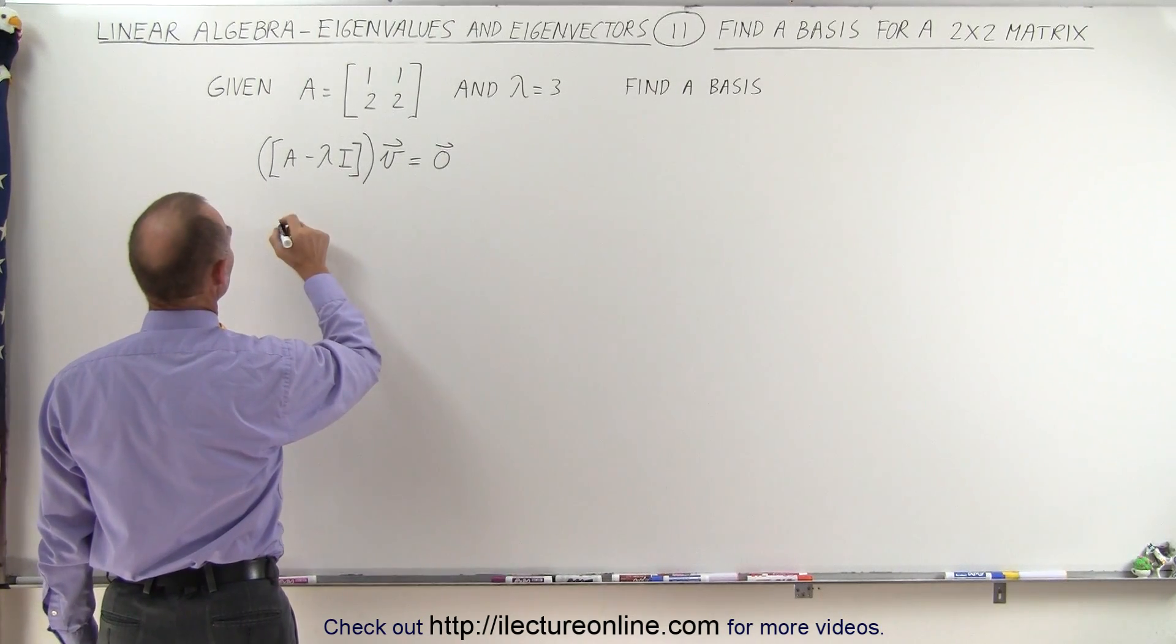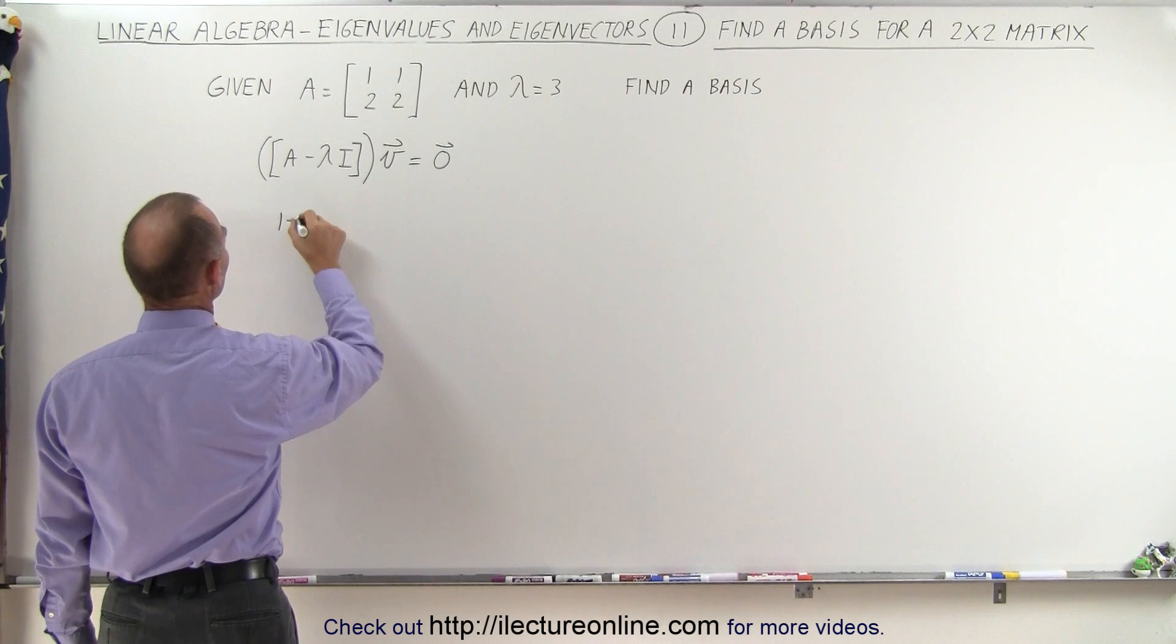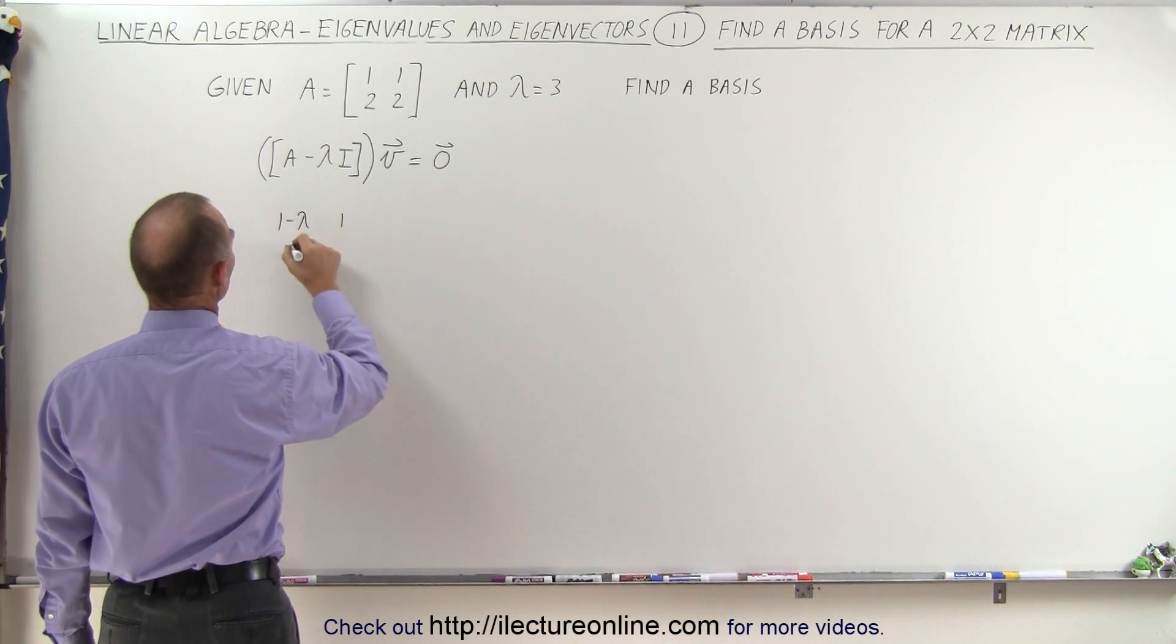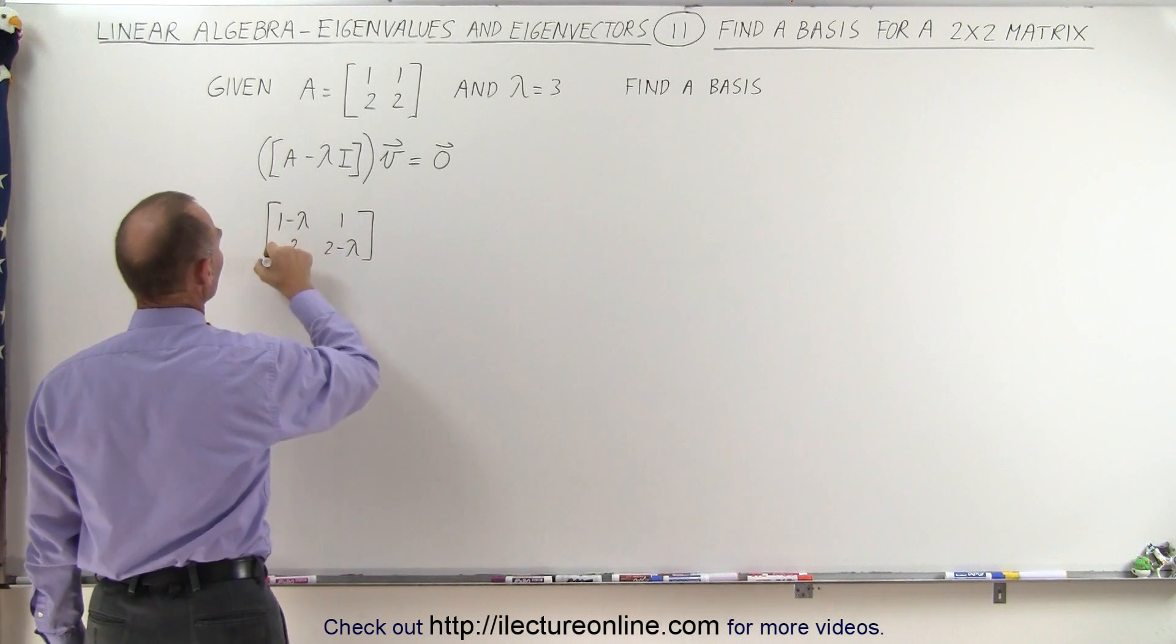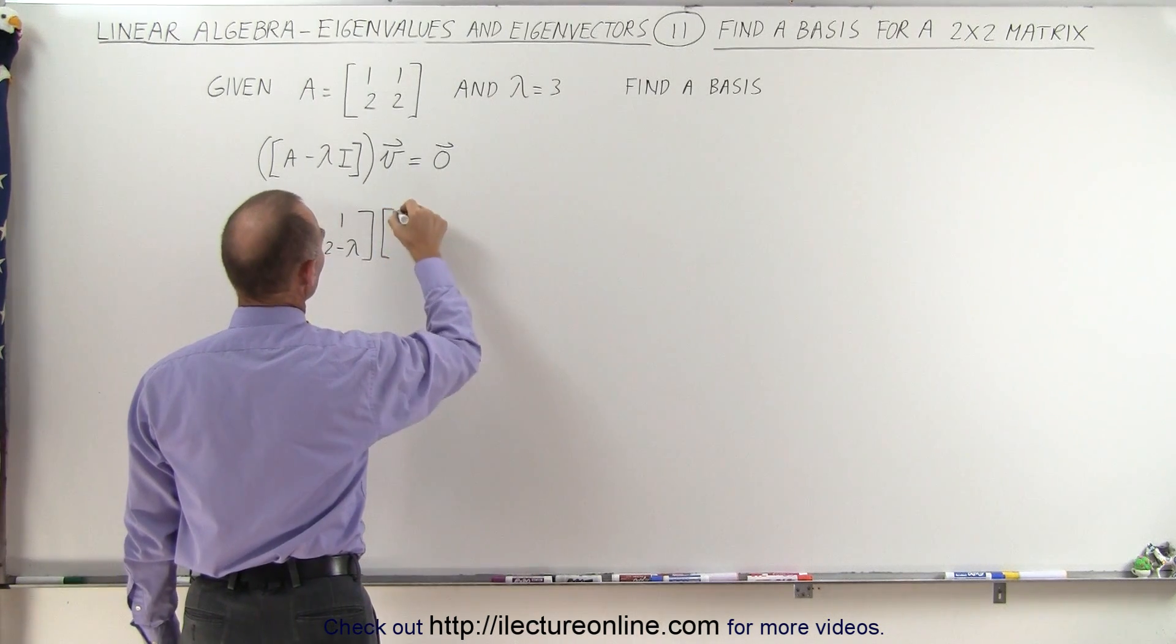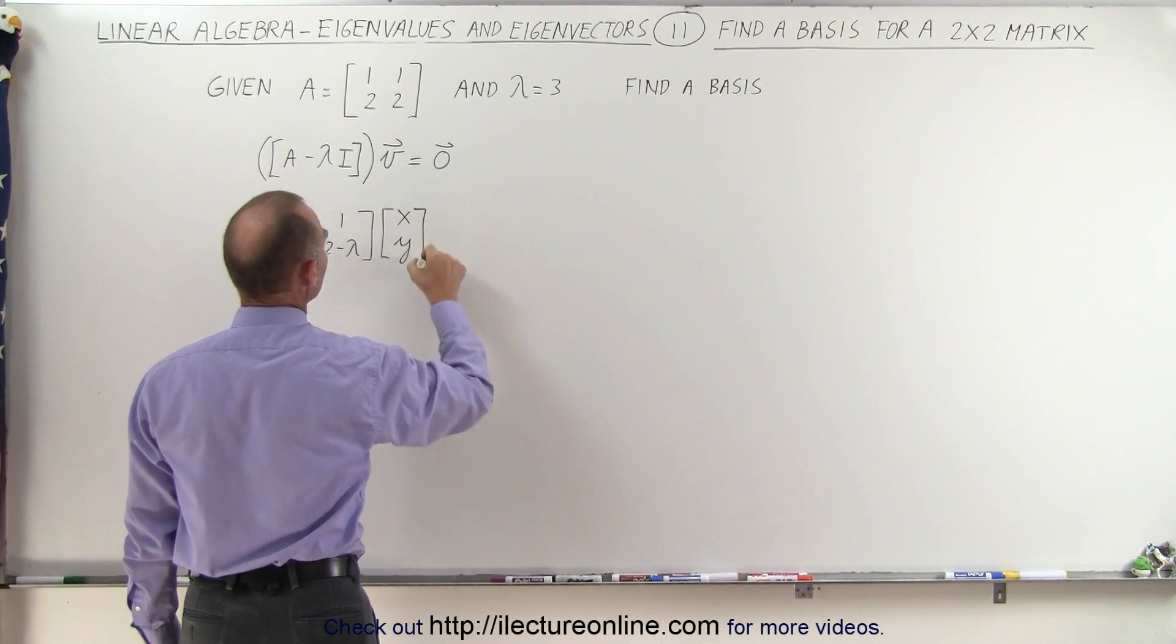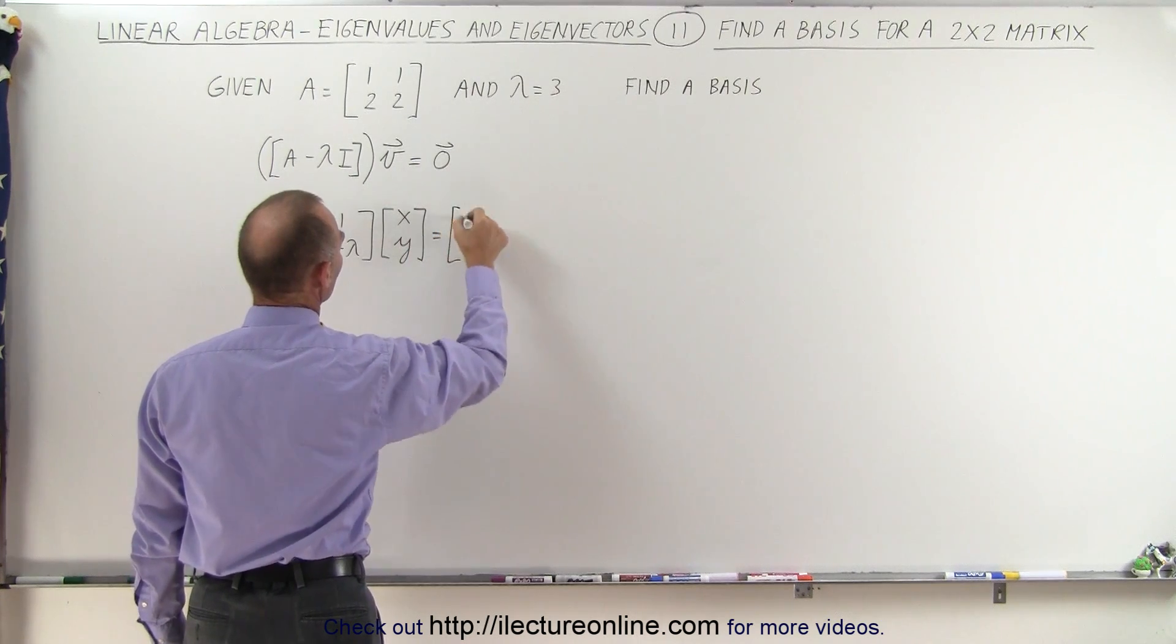In other words, we can say that 1 minus lambda, 1, 2, 2 minus lambda, we multiply this times the vector V, which can be defined as x and y, and that then equals 0, 0.